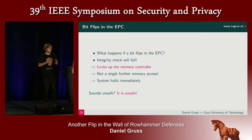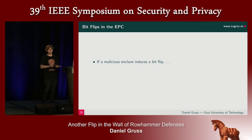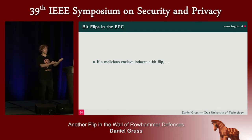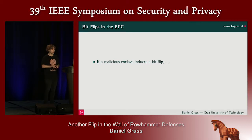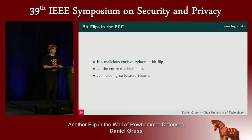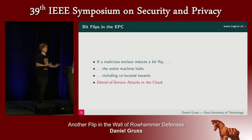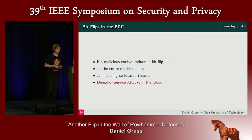What if this happens in the cloud? If a malicious enclave does that in the cloud — for instance, Microsoft now has a cloud that allows you to use SGX — if we trigger that in the cloud, the entire machine halts, including the co-located tenants. So this is a cheap denial of service attack in the cloud. And you can do that again and again, every time the system is booted up.